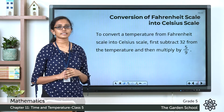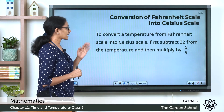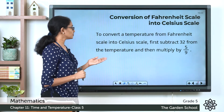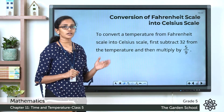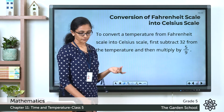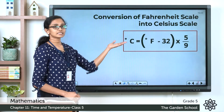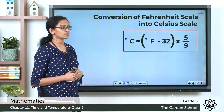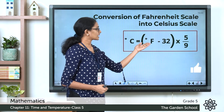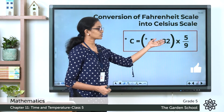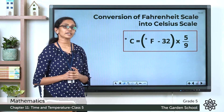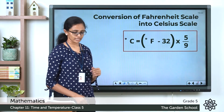Now let's see how we can convert from Fahrenheit scale to Celsius scale. To convert from Fahrenheit to Celsius, first subtract 32 from the temperature and then multiply by 5/9. The formula is: °C = (°F − 32) × (5/9).